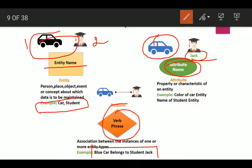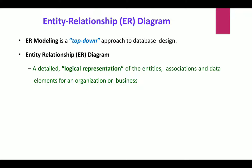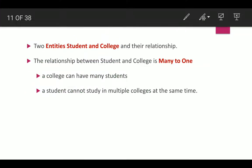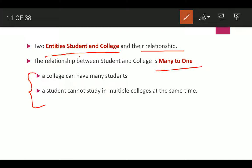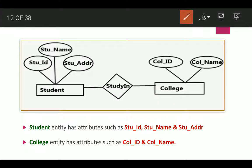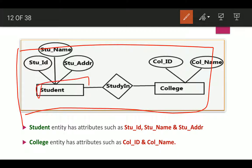Entity name, attribute name, and relationship — these three are the main components of an ER diagram. Data modeling can be said as a top-down approach. It is a detailed logical representation of the entities, associations, and data elements for an organization or business. For example, a simple ER diagram with two entities — student and college — shows a many-to-one relationship: a college can have many students, but a student cannot study in multiple colleges at the same time.